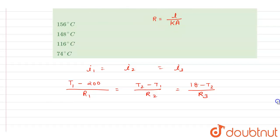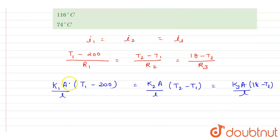So we can write down it is k1, if you see, it is A, T1 minus 200 by l. It is k2 A by l, T2 minus T1, is equals to k3 into A, it is 18 minus T2 into l. So you can just cancel out this A by l, A by l, and A by l.